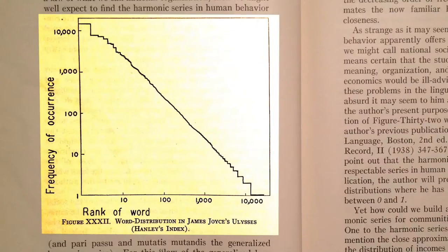On logarithmic graph paper, where the intervals go up in multiples — 10, 100, 1000, and so on — this comes out as a straight line. To explain this in terms of the human tendency to minimise effort, Zipf said that we like to give words broad meanings, rather than have a huge vocabulary covering every possible shade of meaning.